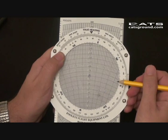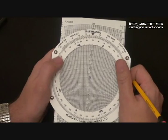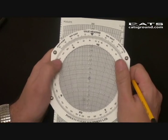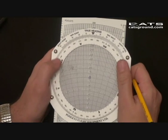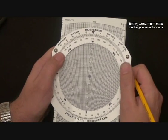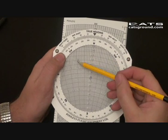Now we need to calculate ground speed home. The reciprocal track is 270. Place this under the true heading index. Note that the wind cross has moved to the port side, showing 9 degrees port.